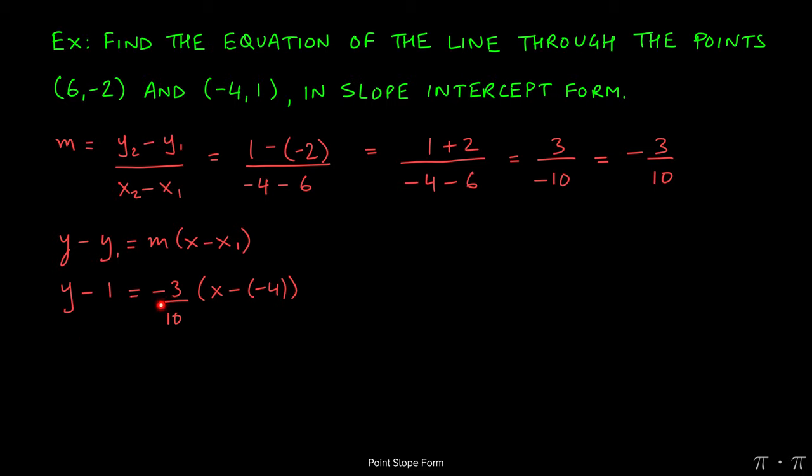If we multiply both the negatives, we get a positive, so that yields y minus 1 equals -3/10 times the quantity (x + 4).